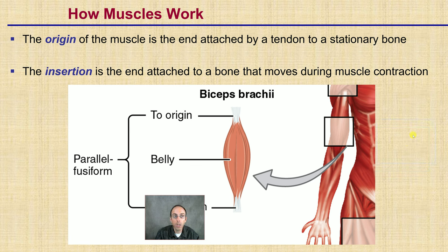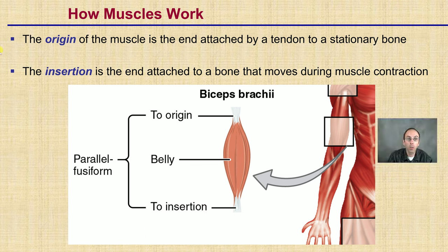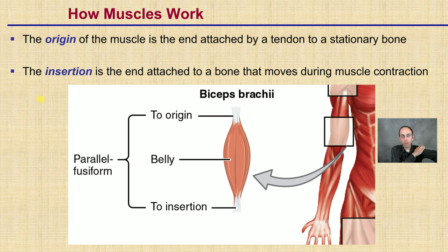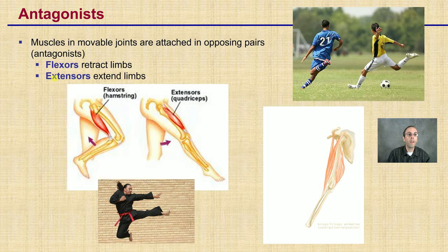How do muscles work? We need a point of origin and a point of insertion. The origin is the muscle end attached by a tendon to a stationary bone — it's in a fixed position. The insertion is the end attached to the bone that moves during muscle contraction. Using my arm as an example, this would be your origin up here, and the insertion would be down at the elbow joint, allowing those bones to move. Muscles at movable joints are attached in opposing pairs as antagonists — flexors retract the limb and extensors extend the limb.